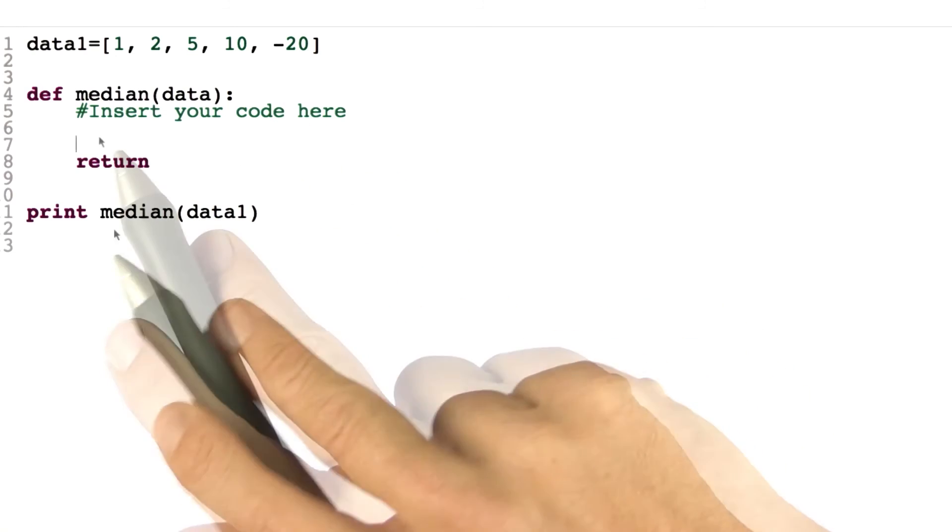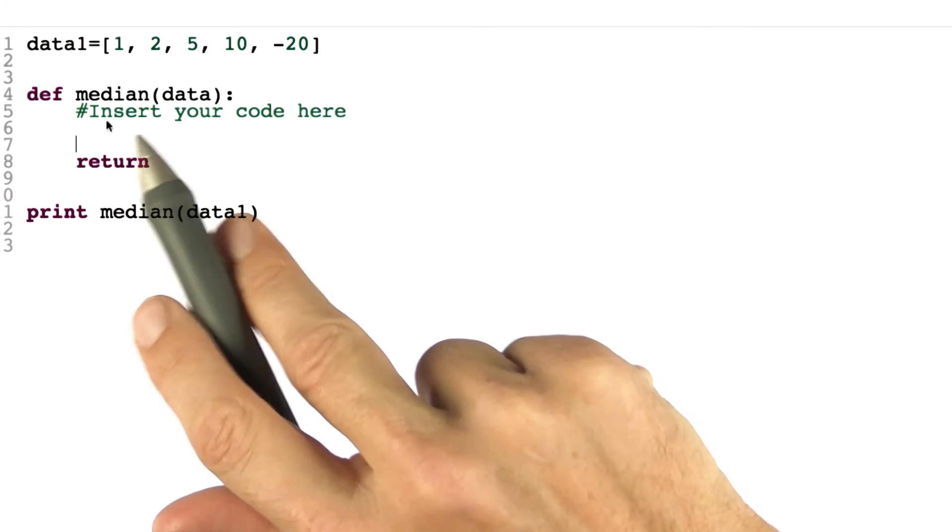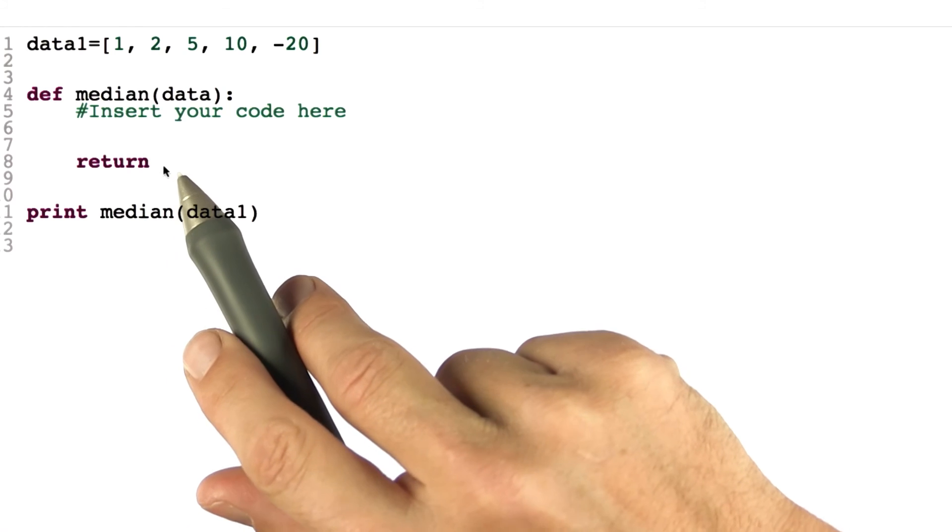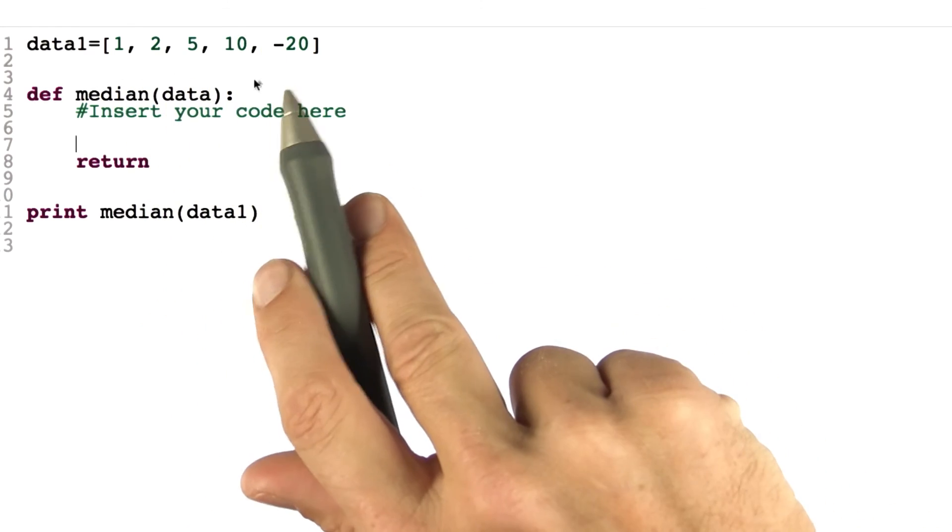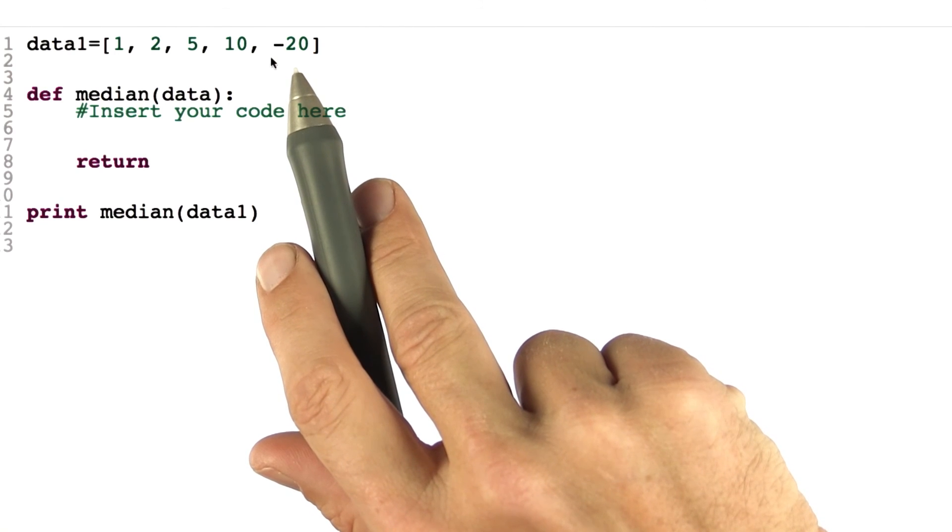So here's the code. To solve this, first make a new sorted list of the data and then find the corresponding element in that list to return. And let's assume there's an odd number of items in the list, so things should always be fine.